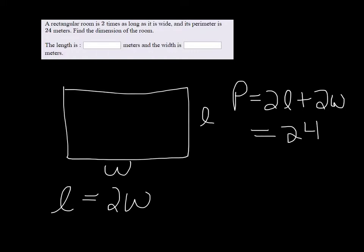So if we use that formula where L is 2W, just so all the variables are the same, and for P I'm going to put 24, because that's what the perimeter is.